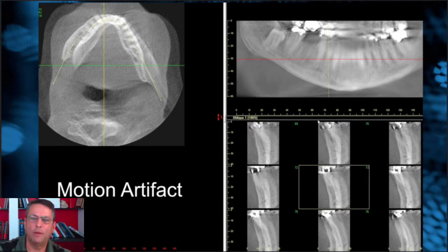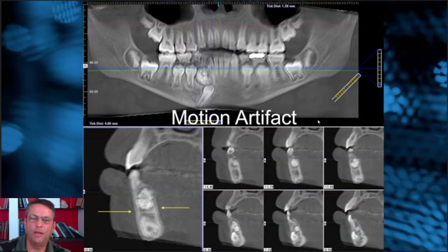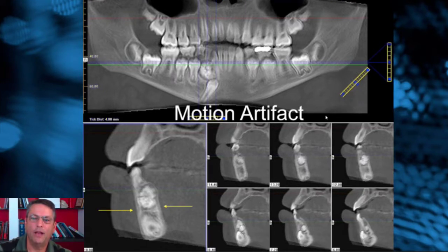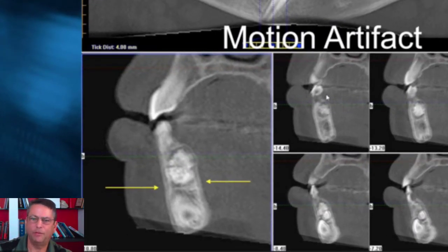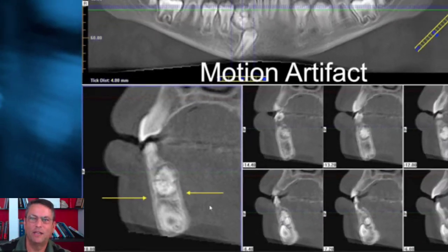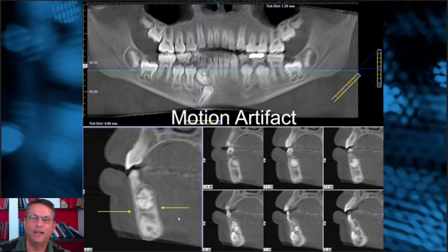We talked about patient motion artifact, and in this kind of case it's very easy to see that the quality is unacceptable. But sometimes we have little nuances where the patient just moves a little bit. As you can see in this particular image, there's a double border, and this cluster odontome — we can't be sure what this is. It's double imaged just slightly, so there's a slight patient motion artifact that has degraded the quality and made diagnostics difficult.